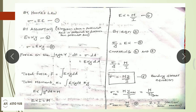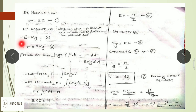By Hooke's law, stress is proportional to strain: σ = E × ε. By the assumption that elongation above a particular axis is proportional to distance from that axis, strain ε is proportional to y, so we write ε = k·y — that is equation 2. Substituting equation 2 into equation 1 gives σ = E·k·y. Since E and k are constants, σ/y = constant — that is equation 3.